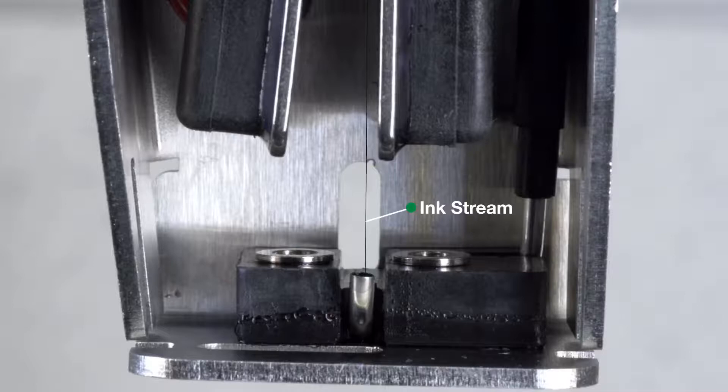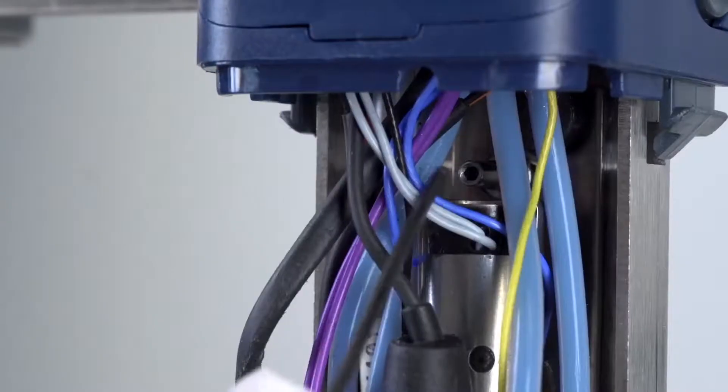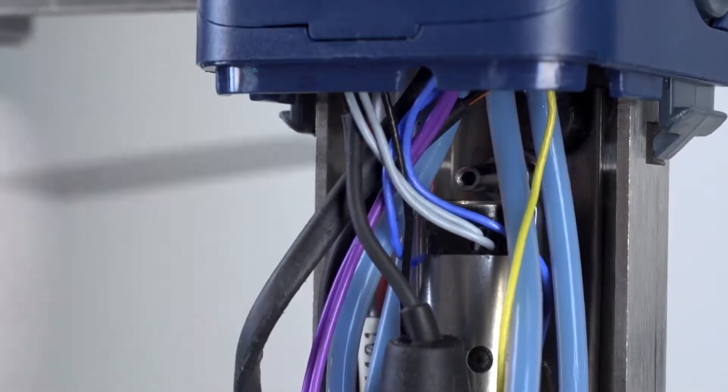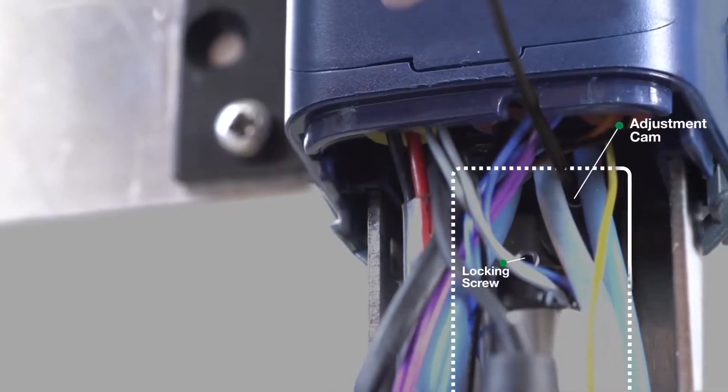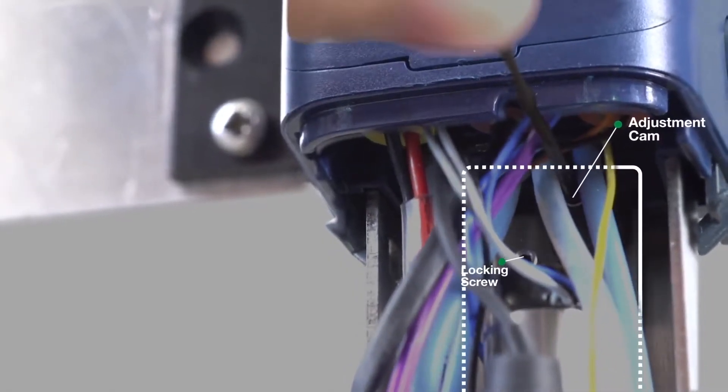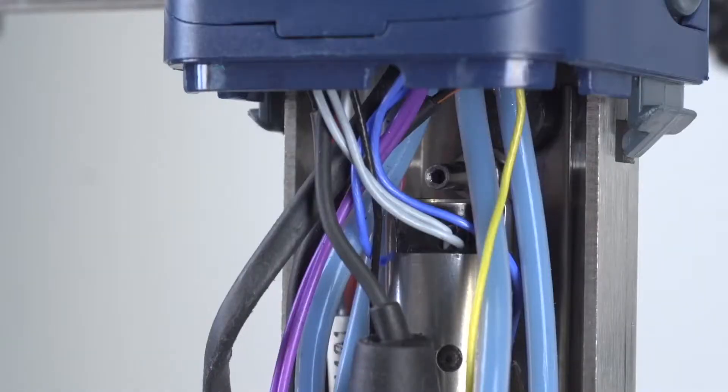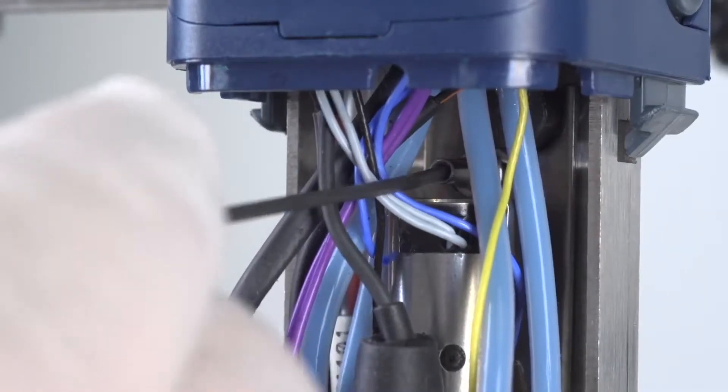To adjust the ink stream horizontally, left to right, you need to ensure that the locking screw is loose. Then, turn the adjustment cam until the ink stream is 75% to the left of the gutter as shown. Once aligned, tighten and lock the locking screw in place.